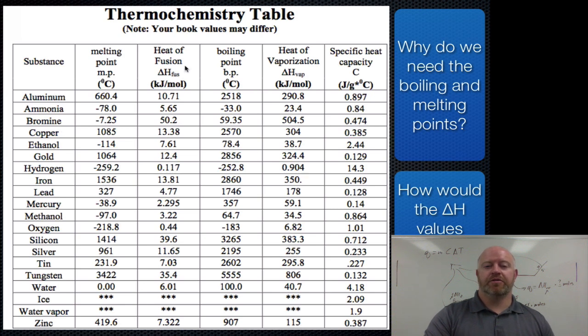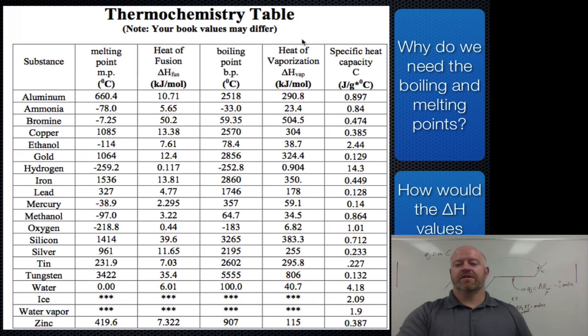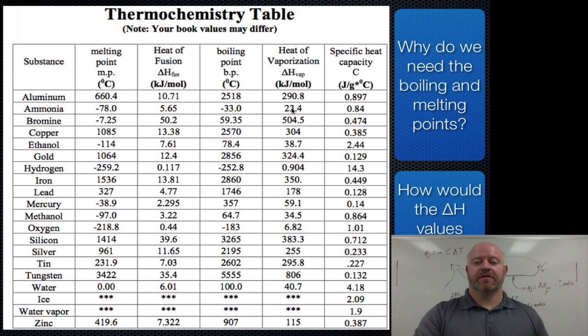So what I would maybe do right here, because fusion isn't a word we're real comfortable with, maybe change that or write melting by this. And then, above it, write freeze and put a negative sign there. So it reminds you that if you're going to freeze something that this is a negative. Yeah, pull these numbers off and make them negative. Same thing over here. Heat of vaporization. Maybe above that, write the word condense and put a negative sign by it. So it reminds you that when you're condensing, it's the same number. We just make it negative.